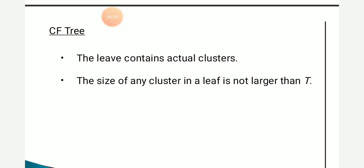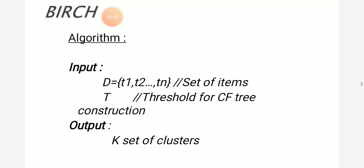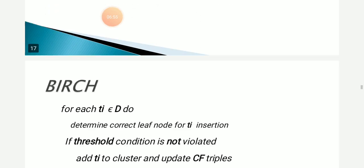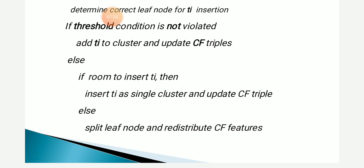The BIRCH algorithm takes input D = {T1, T2, ..., Tn} containing the set of items, and T as the threshold for CF tree construction, producing K clusters as output. For each data point Ti in D, we determine the correct leaf node for insertion by finding the closest point. We check the threshold condition: if not violated, we add Ti to the cluster and update the CF triplets. Otherwise, if there is room to insert Ti, we insert it as a single cluster and update the CF triplets. If not, we split the leaf node and redistribute the CF features.